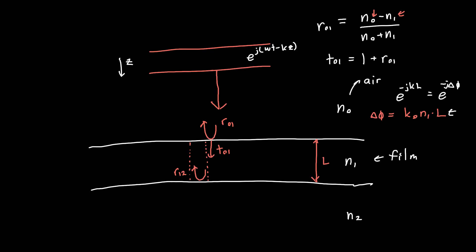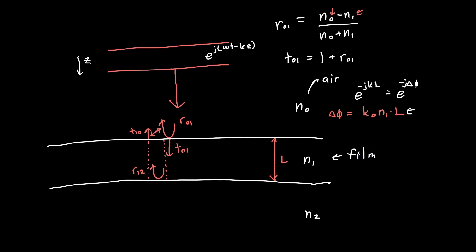After reflecting off the back, the wave travels back another distance L, picking up another phase, and then some of it gets transmitted out through the front with coefficient T10. We can write T10 in terms of r01: since r10 = −r01 (swapping n0 and n1 introduces a sign flip), we have T10 = 1 − r01. These two waves — the directly reflected one and this transmitted one — now have the opportunity to interfere.